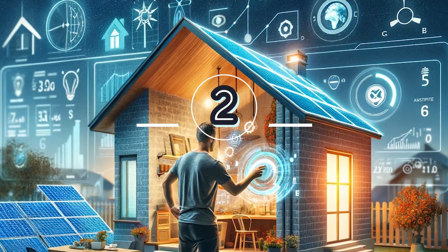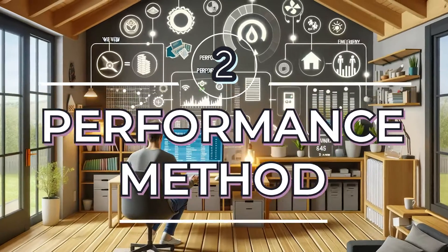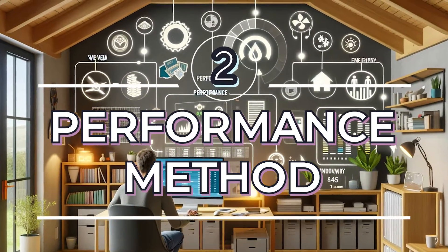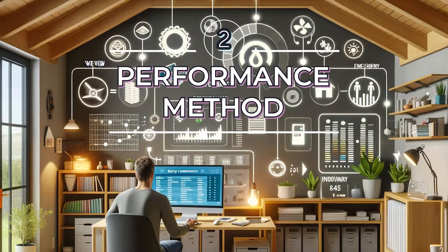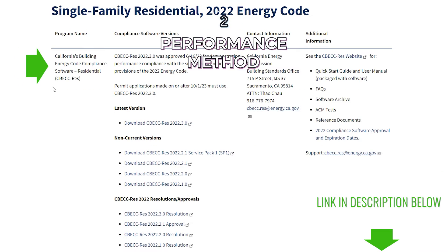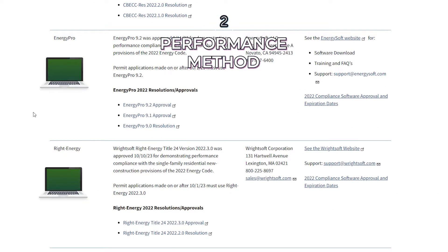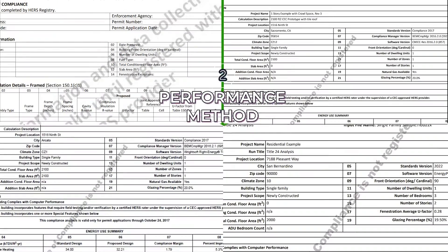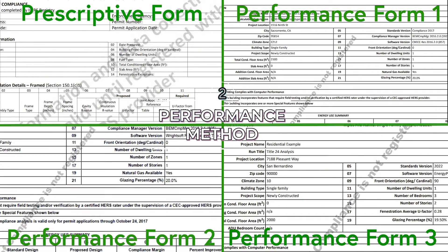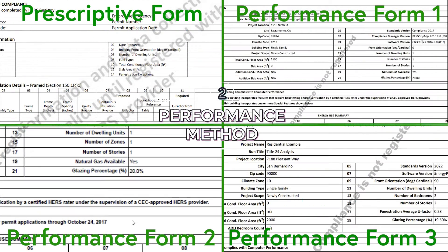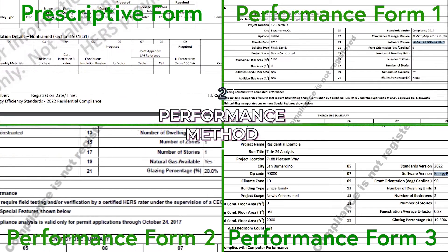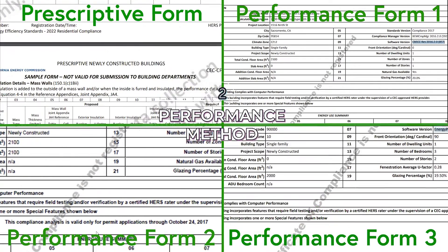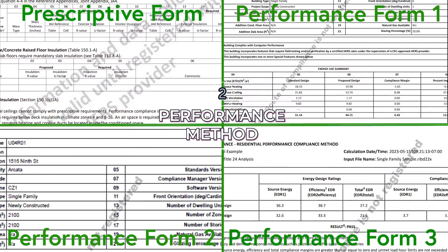Option two, the performance approach, involves using one of three Energy Commission approved software tools. One of the software tools is available for free, and the others are available for a fee. And even though there are different methods to obtain your energy forms, the structure of these documents remains consistent across all projects throughout California, as established by the Energy Commission.